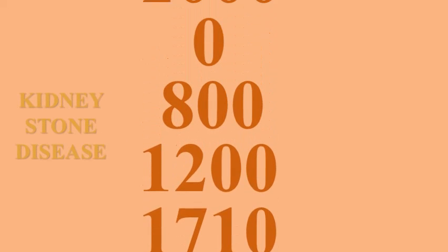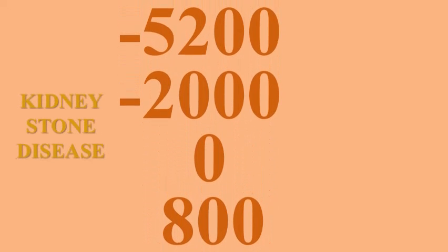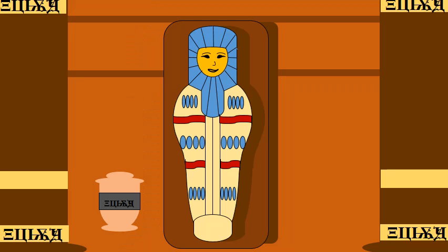Kidney stone disease is one of the oldest diseases among humans. Archaeologists discovered a bladder calculus accompanying the skeleton of an Egyptian mummy that was about 6,800 years old.